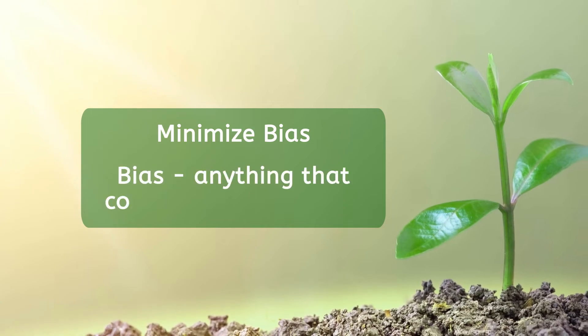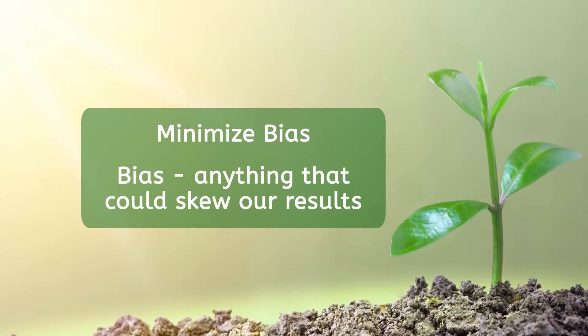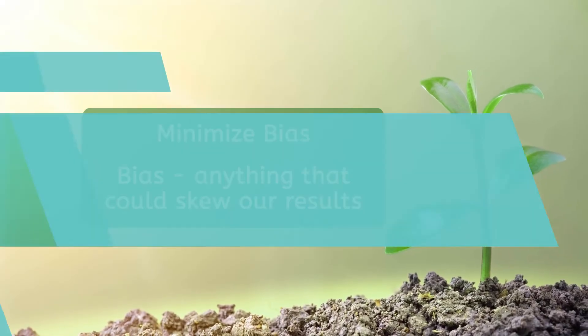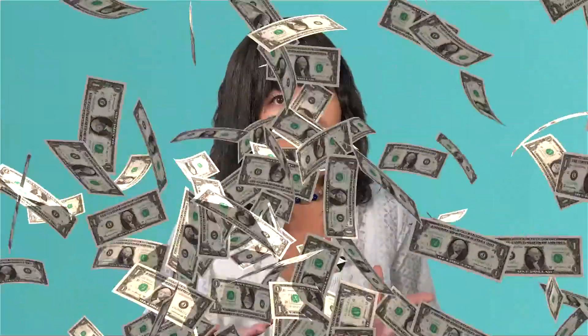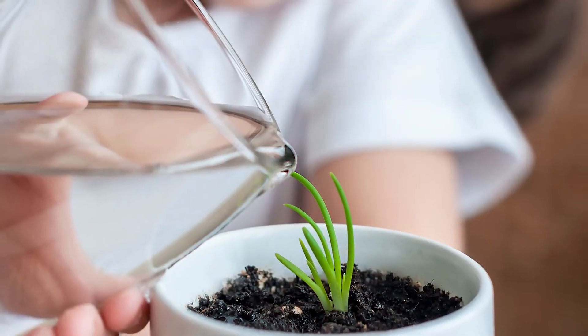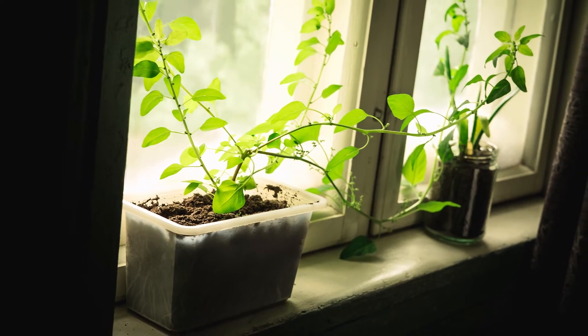The last thing we need to consider in our experimental design is how to minimize bias. You may have heard the word bias before — it's anything that could possibly skew our results. Well, the first possibility of bias here might actually be me. I have a vested interest in the outcome of this experiment. I'm still hoping to get rich from my fertilizer, so I really want these results to show that it works very well. Can I possibly resist the temptation to slip a few extra sips of water to the experimental group, or put them a little closer to the window? It would be so easy. No one would know, right? Yikes, that's not good science.